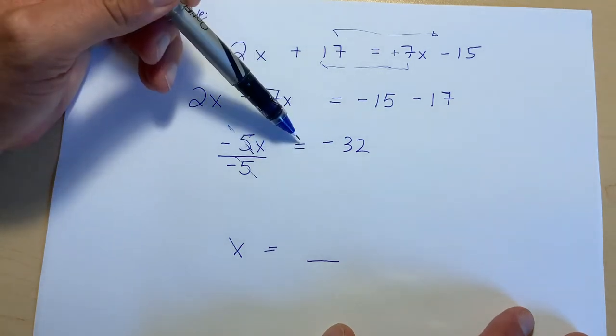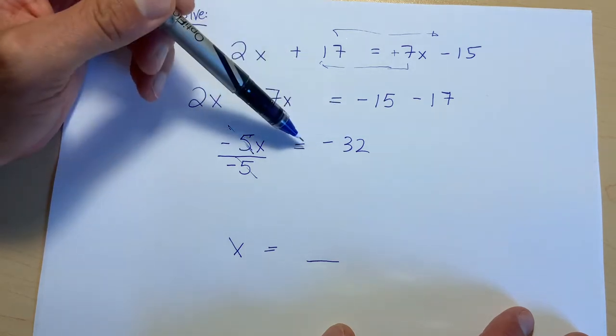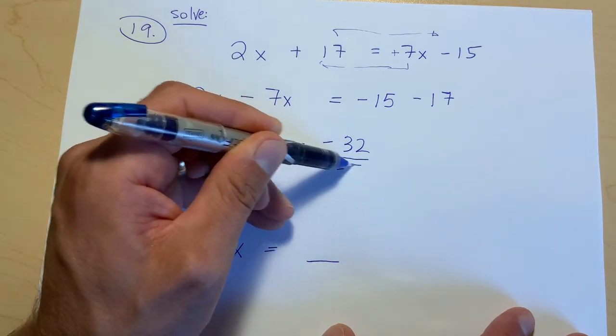But this equal sign says that if we do something to this side, you have to do the equal thing to this side. So on this side we're going to divide by negative 5.